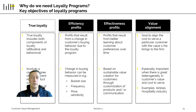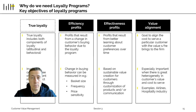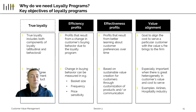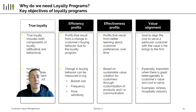Loyalty programs generally give three different types of benefits. The first one is called efficiency profits — profits that result from changing customer buying behavior because of the loyalty program. Research shows that when customers enter a loyalty program, they change their buying behavior. They may buy more, which is called basket-size effects, they may buy more frequently, or they may become less price sensitive, or all of the above.